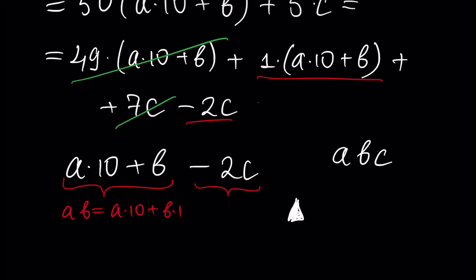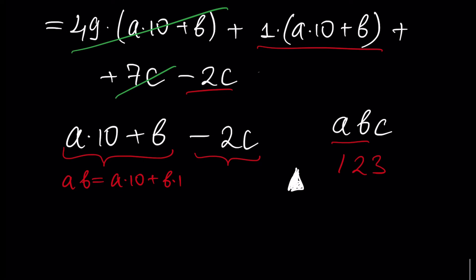So once again: if the number formed by digits which are not the last digit — the first, second, third digits but not the last — in our example AB, so if we have number 123, we look at number 12, minus 2 times C. If this number is divisible by 7, our initial number is divisible by 7.